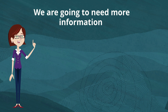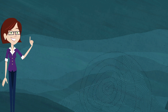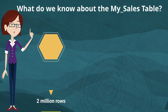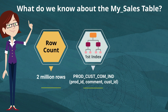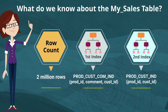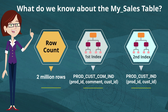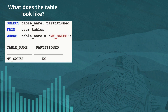So we're going to need more information from the database to work out why the cost of the plan everybody wants is so expensive. What do we know about the my sales table? A simple select count star reveals that there are 2 million rows in my sales. We also notice there are two indexes on it. The first index contains all of the columns that we need for the query — that's the index everybody was expecting, called prod customer com index. The second index is called prod cost and is only on the two where clause predicates: product ID and customer ID. Let's take a look now at the sales table structure. After all, it's got 2 million rows — you would expect it to perhaps be partitioned.